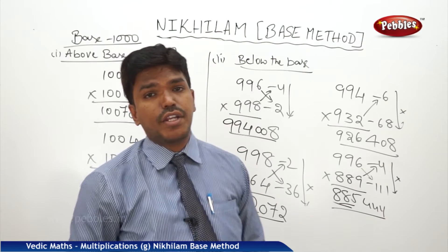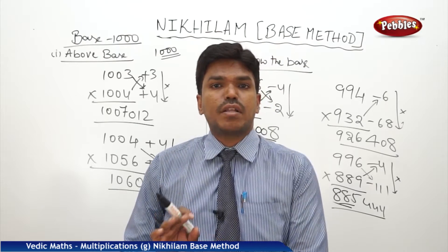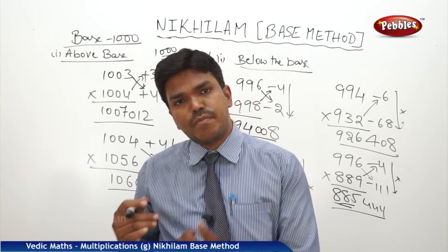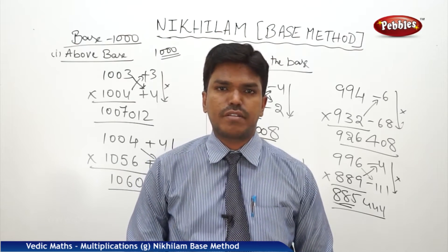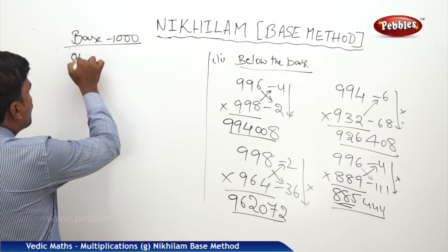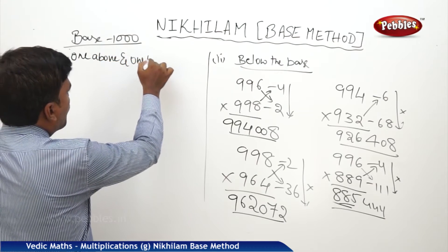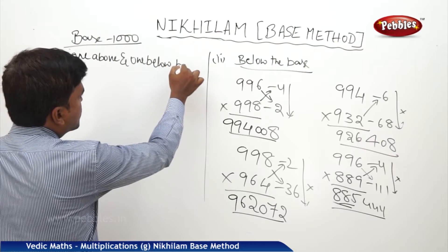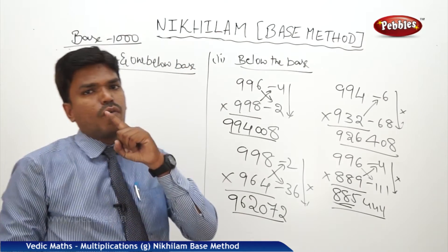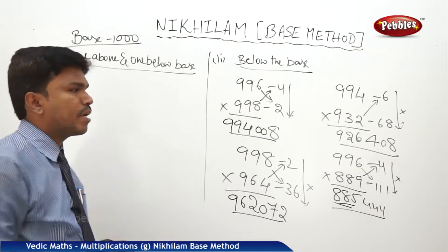Like this you can calculate any two numbers which are below the base when you are taking the base as 1000. Now we will see one above the base as well as one below the base of 1000 — that means how to multiply two numbers where one is above and one is below the base.